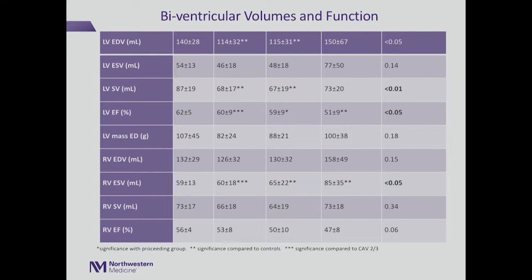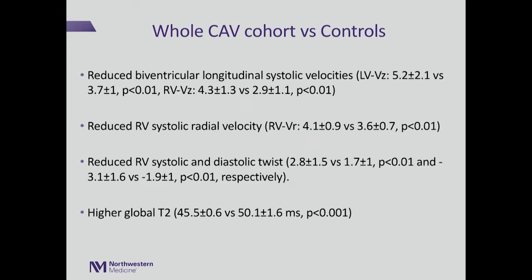Regarding volume analysis, controls had higher left ventricular end-diastolic volume, higher ejection fraction, and higher stroke volume compared to CAV patients, while right ventricular end-diastolic volume was higher in CAV patients.